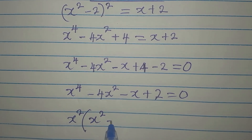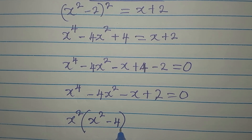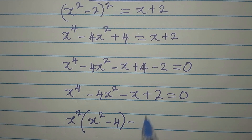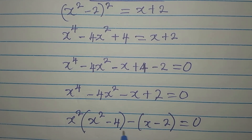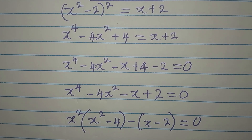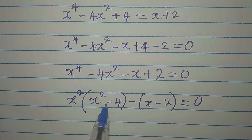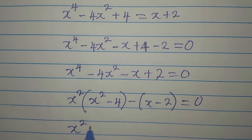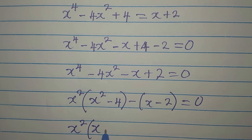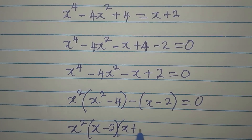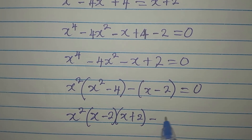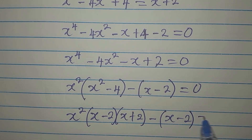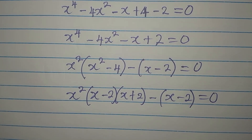We can factorize what we have here. x squared is common to the first two terms, so we have x squared into x squared minus 4, then we have negative x minus 2. We can apply difference of two squares here, so x squared minus 4 becomes x minus 2 into x plus 2.